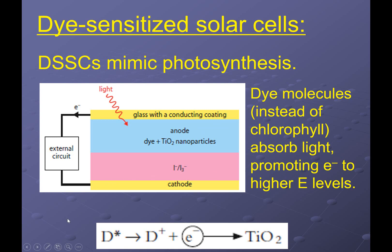We can imagine starting off with just dye, D. It can absorb light energy and end up forming D-star — an excited dye molecule. Because the excited molecule can ionize, it can form D-plus by losing a net excess of electrons. These free electrons can't get through the p-n junction — they go through the external circuit instead. The dye is sprayed onto the TiO2, so the electrons are first passed to the TiO2 before making it through the rest of the circuit.